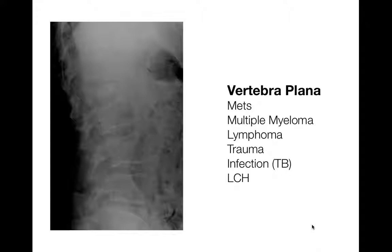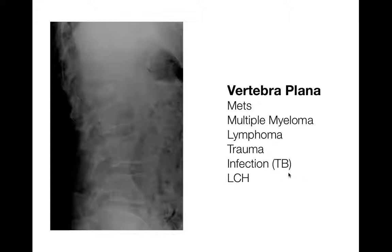The differential for vertebra plana: mets and multiple myeloma are super common, things you'll see more often — here's a case from breast cancer metastasis causing vertebra plana deformity. Lymphoma is another common cause. In children or young adults, think EG or Langerhans cell histiocytosis. Other considerations: trauma causing vertebral body collapse, usually in osteopenic individuals, and infection such as tuberculosis. Standard differential: mets, multiple myeloma, lymphoma, traumatic collapse, infectious processes like TB, and in kids or young adults, EG.